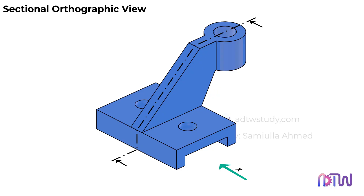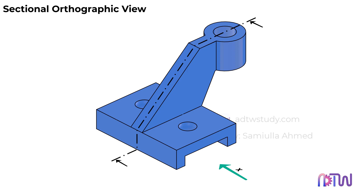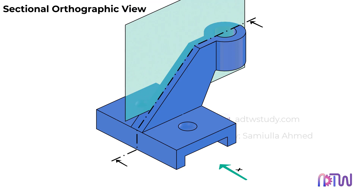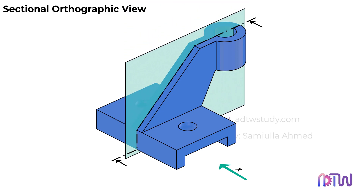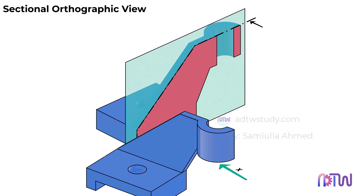First, observe the direction of viewing — we are looking at the object from this side. Additionally, notice the sectional plane, which cuts through the object along this line. This means the object is split into two symmetrical halves, like this.